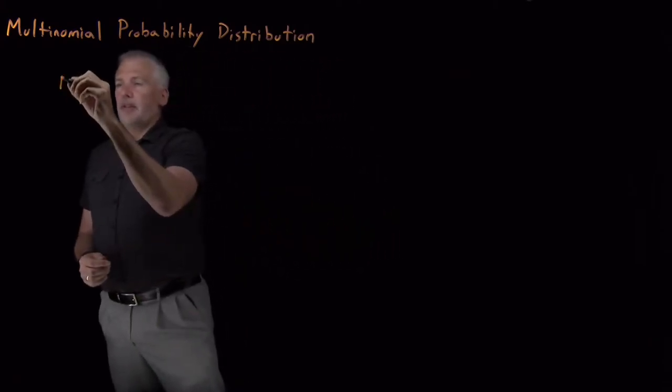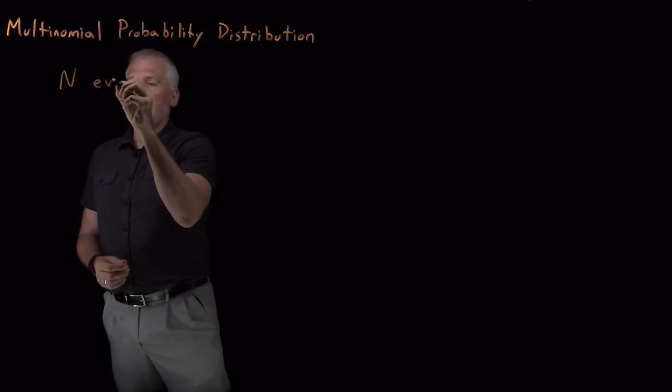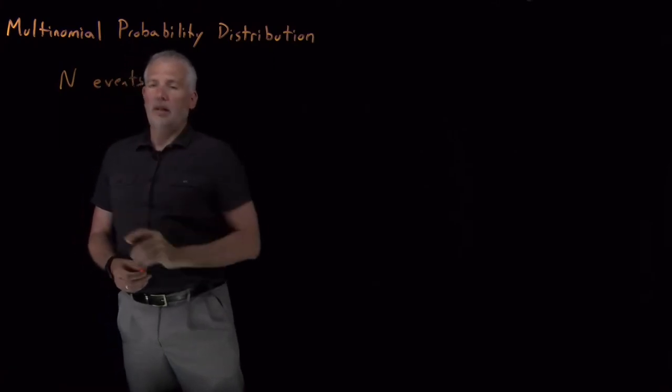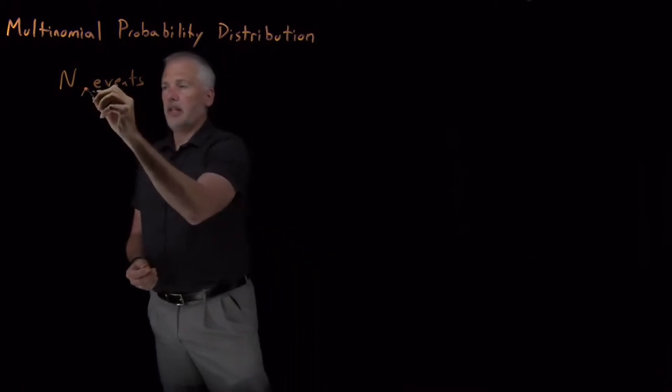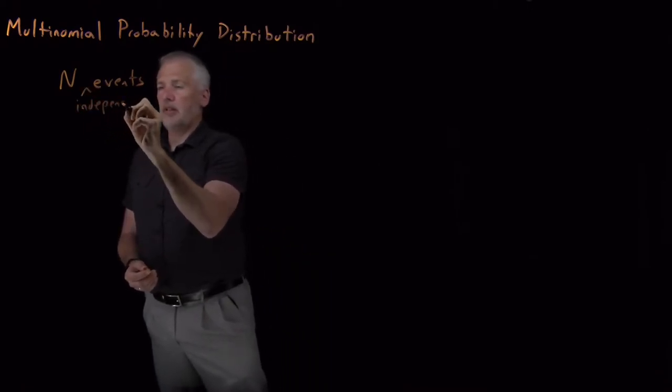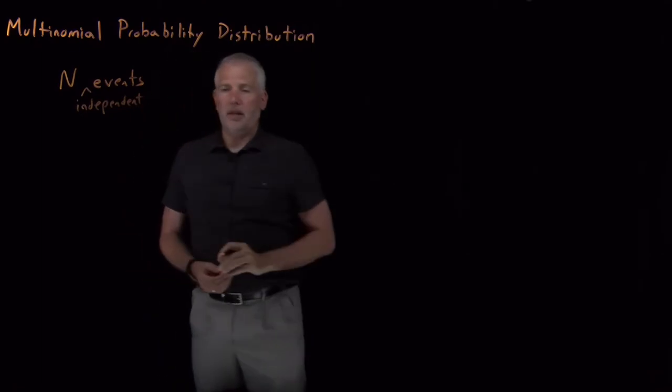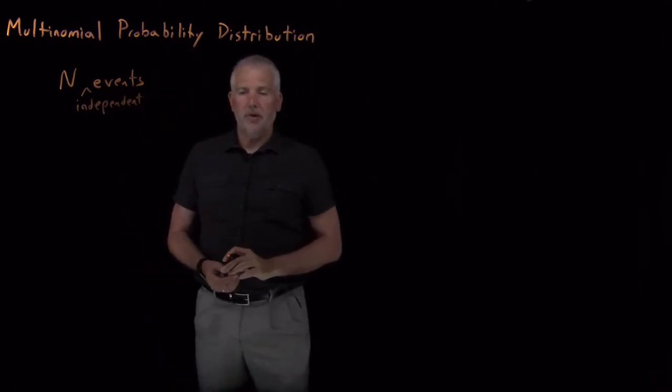So suppose we have a total of big N events that are going to happen. Let's say, in addition, these are independent events. They might be coin flips or rolls of the die, or they might be individual molecules that behave independently from one another.